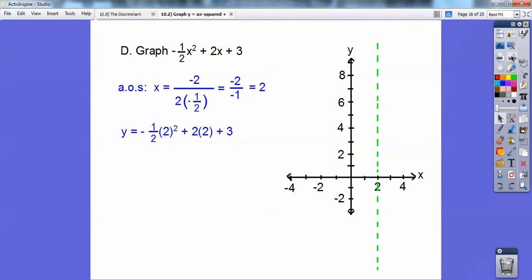Plug it in right there for y. So I get it equals 5. So my vertex is at 2 comma 5. There it is right there. And this guy is going down because it's negative. This 1 half is 1 half of 1 squared, 1 half of 2 squared.